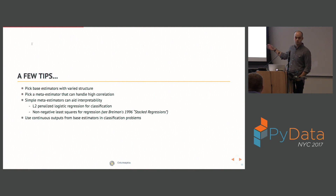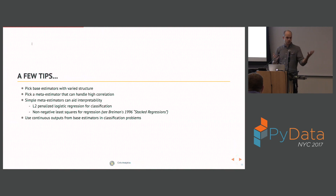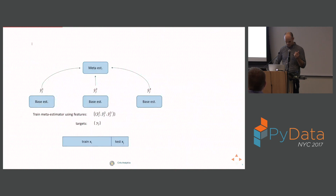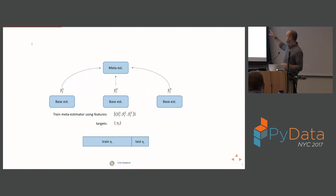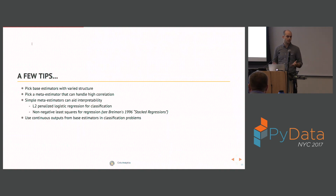If you decide to go with a stack model, I have a few tips. First, pick base estimators with varied structure — you don't want three linear regressions as your base estimators; that won't help. Pick models with different relationships between X and Y. Second, pick a meta-estimator that can handle high correlation. If any of your base estimators are any good, all your y-hats will be trying to predict the same thing, so they'll be really highly correlated across base estimators.